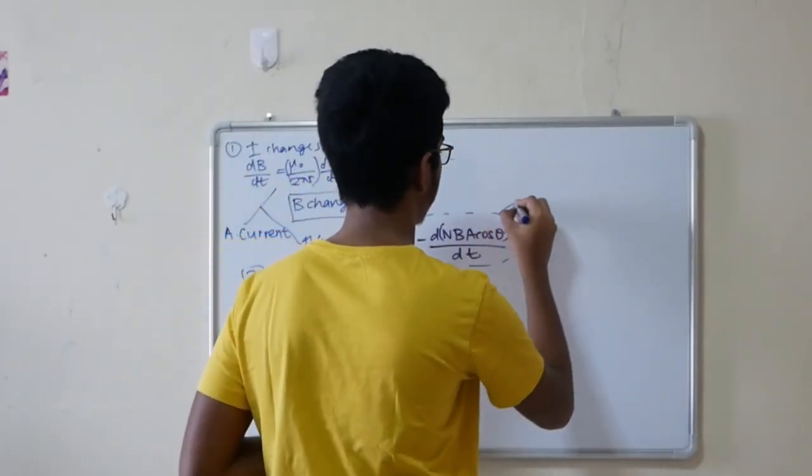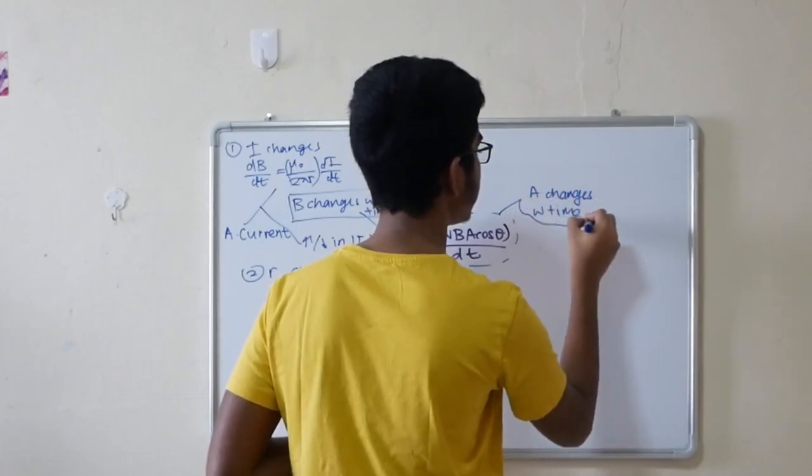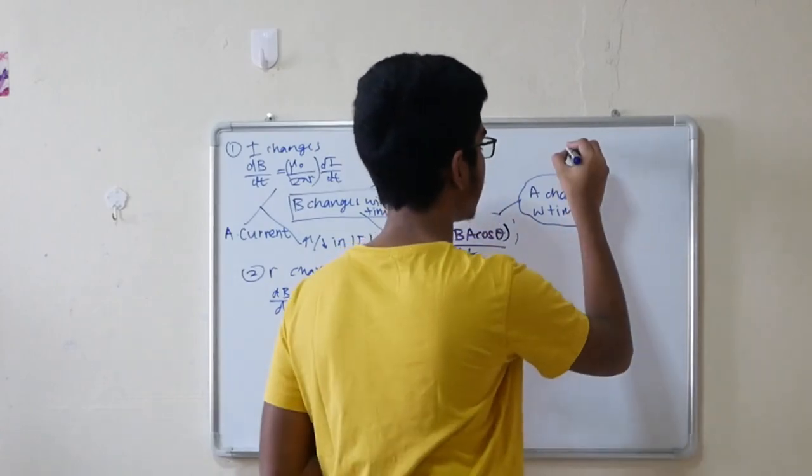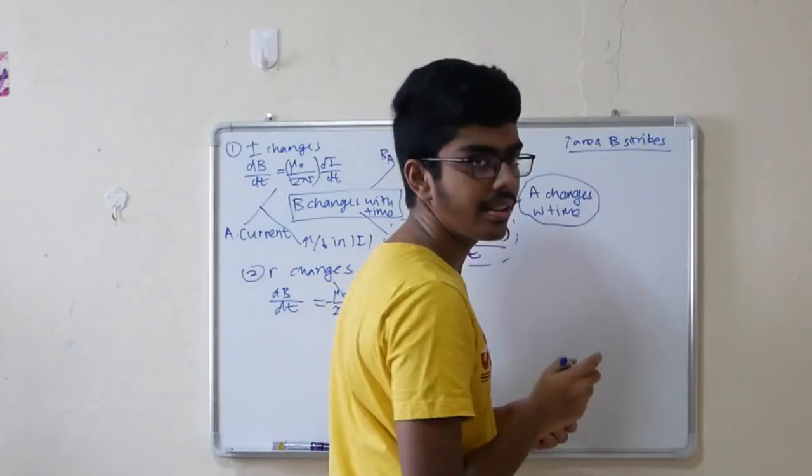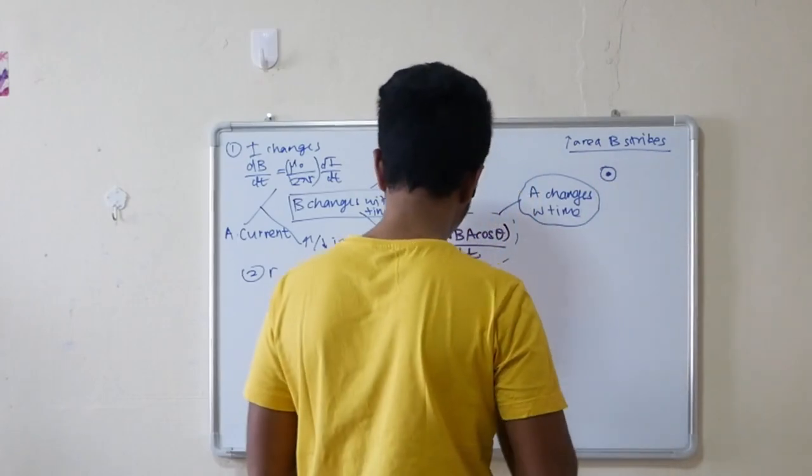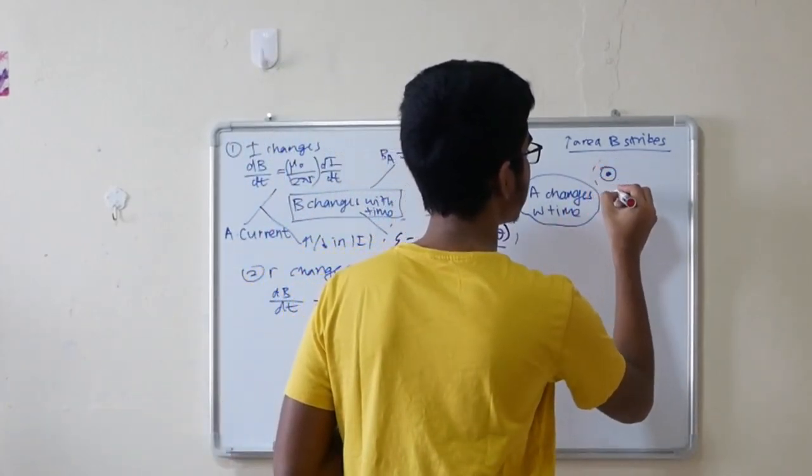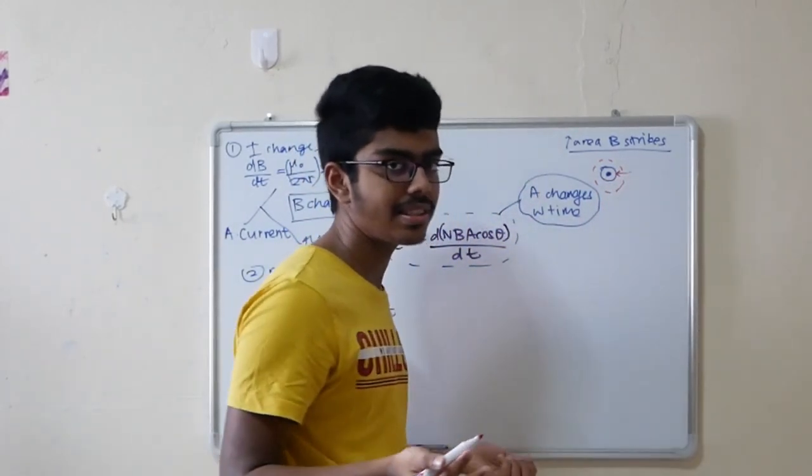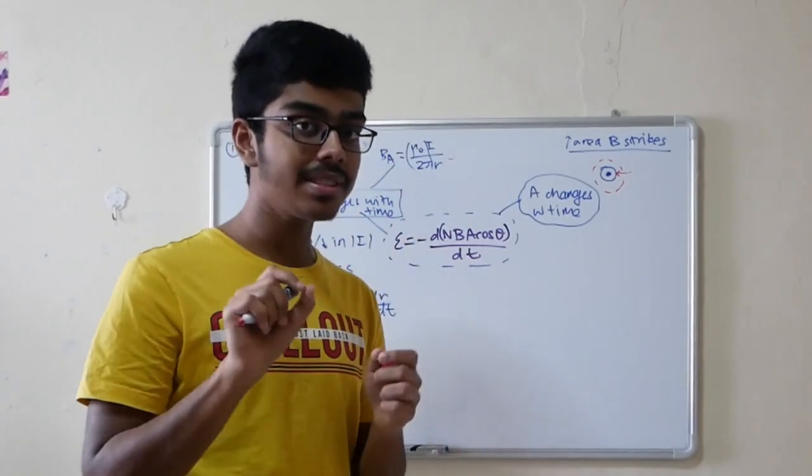Now let's bring to the next part. A changes with time. B is constant, A changes with time. How can A change? Number one, for example, you increase the area which the B field strikes. So how is that possible? Either you have a coil, the B field only strikes this portion, but now you increase the area. So you put like a bigger magnet and it strikes this entire position. Or you increase the size of the coil itself, which is actually pretty hard.